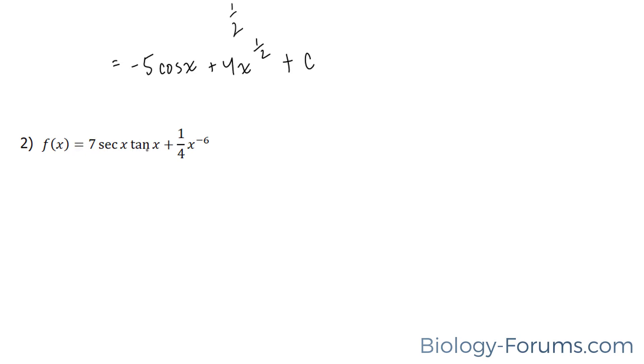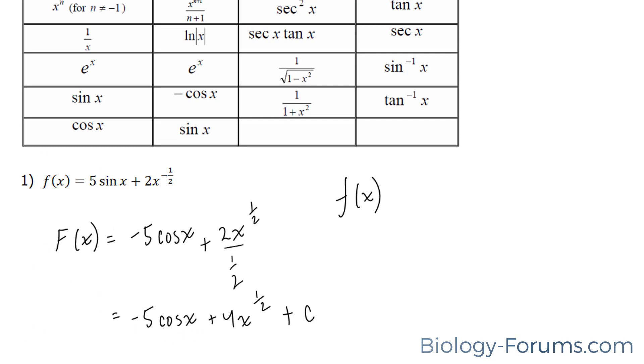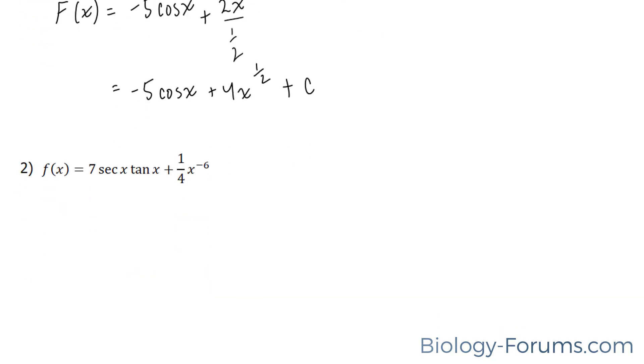This one right here is more complicated, so we're going to use our list. Secant x tan x gives us secant x. So we have 7 secant x, and for this part, we're going to increase the exponent by 1, giving us negative 5.